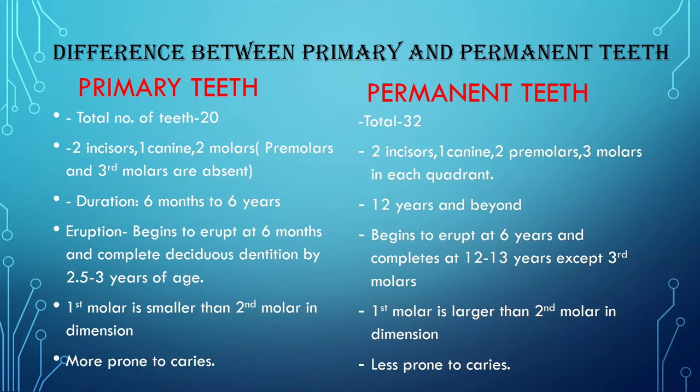Difference between primary and permanent teeth. As you know, there are three periods of dentition: primary, mixed, and permanent. In this video, I am going to discuss the differences between primary and permanent teeth. Primary teeth have 20 total teeth, while in permanent dentition the total number of teeth is 32.